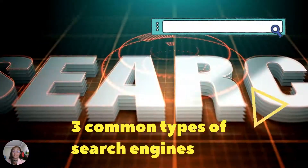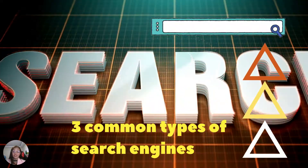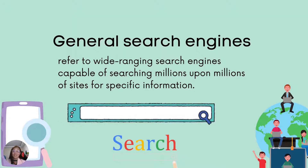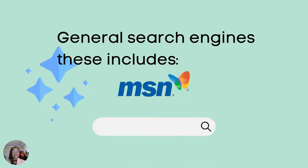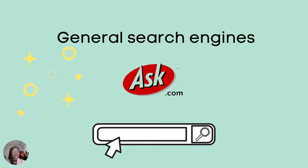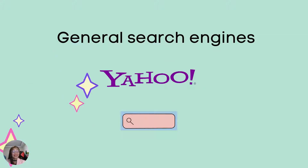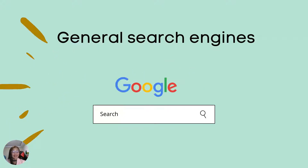There are three common types of search engines. General search engines refer to wide-ranging search engines capable of searching millions upon millions of sites for specific information. This includes MSN, Ask.com, Yahoo, and Google.